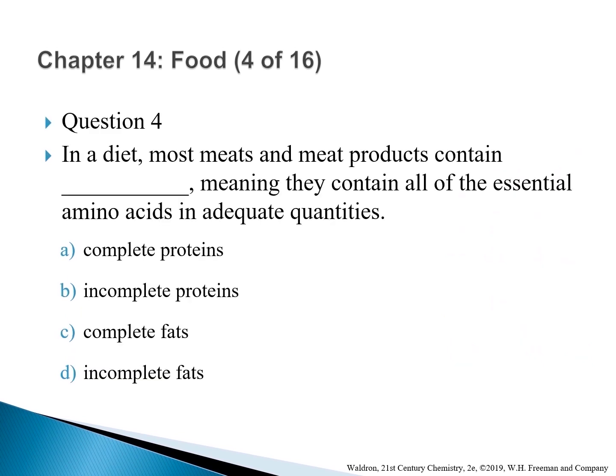Question 4: In a diet, most meat and meat products contain blank, meaning they contain all of the essential amino acids in adequate quantities. The correct answer is A — complete proteins. Most meat products are complete proteins that contain all of the essential amino acids, while most plant-based foods are incomplete proteins.